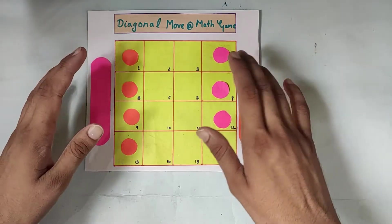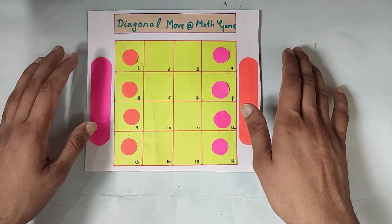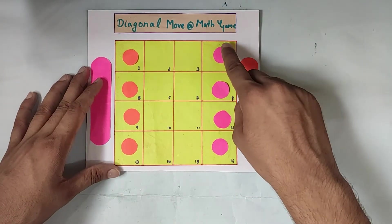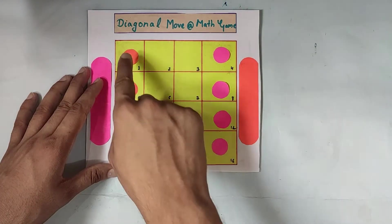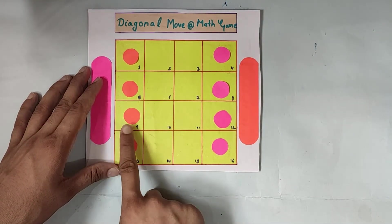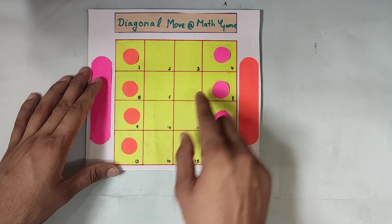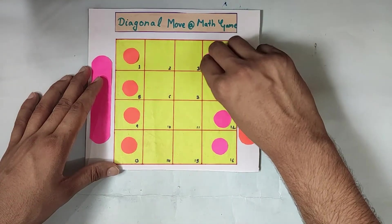The rules and the winning condition of this game is quite simple. The winning condition is that you have to take these pink circles to this side and these orange circles to this side. But you can only move these circles diagonally.